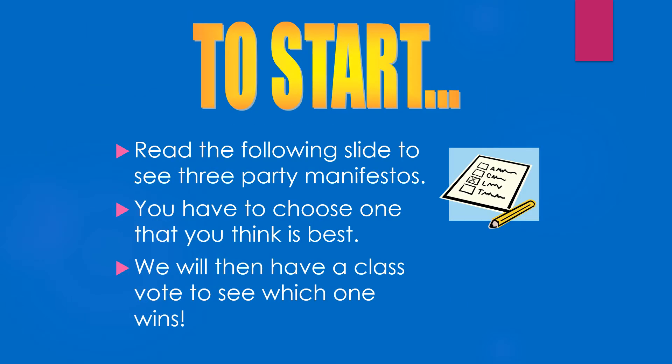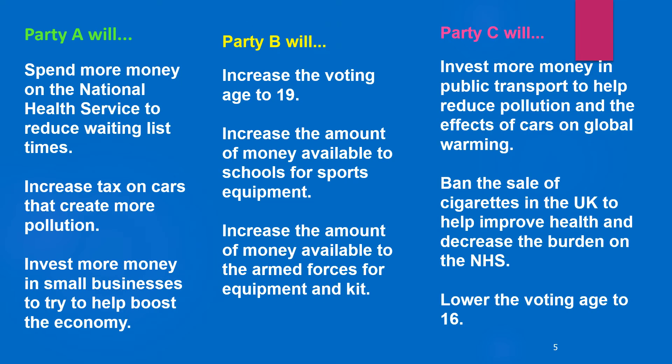On the next slide, there are three party manifestos. You're going to decide which party you would vote for and why. Party A: they're going to spend more money on the NHS, increase tax on cars, and put money into small businesses. Party B: increase the voting age to 19, increase money for sports in schools, and money for the armed forces. Party C: more money in public transport to reduce pollution, ban the sales of cigarettes to help improve the NHS, and lower the voting age to 16. Press pause and have a think about who you want to vote for.